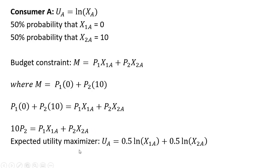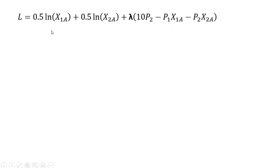This consumer is going to be an expected utility maximizer. There is a 50% chance that state 1 will occur — that's where the 0.5 is coming from — and there's a 50% chance that state 2 will occur, so that's where the other 0.5 comes from. The two probabilities sum to 1.